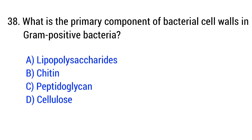Question number 38. What is the primary component of bacterial cell walls in gram-positive bacteria? The right answer is option C: Peptidoglycan.